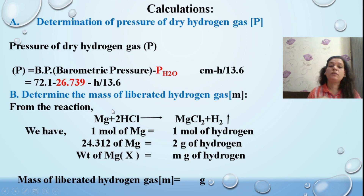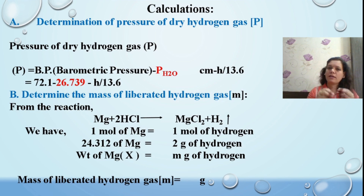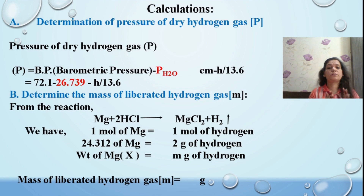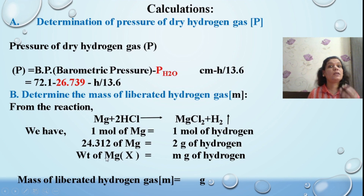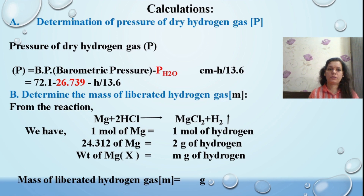Next, find the mass of liberated hydrogen gas. The reaction inside the eudiometer is: Mg + HCl → MgCl₂ + H₂. One mole of Mg corresponds to one mole of H₂. This stoichiometric relation allows us to calculate the number of moles of H₂ from the weight of Mg taken (W). Using the weight of Mg and its molar mass, you can easily find the mass of liberated hydrogen gas in grams.